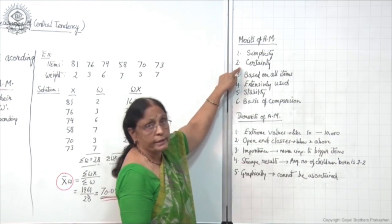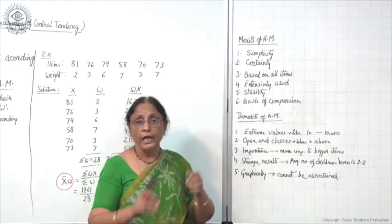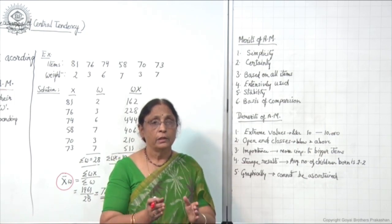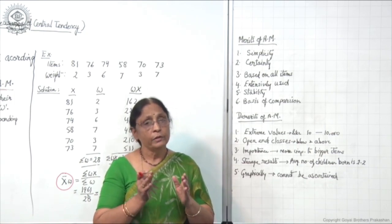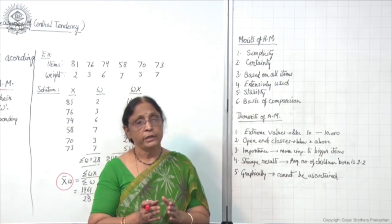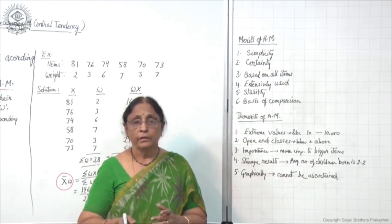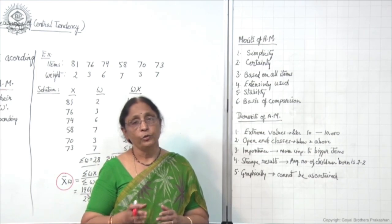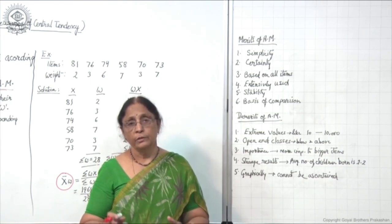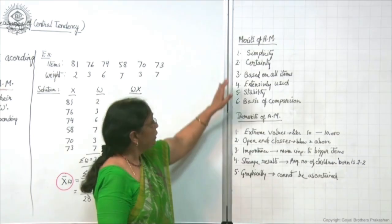The second merit is certainty. Because you are doing the actual calculation, whatever arithmetic mean or answer you are getting is sure and certain, because the answer is obtained after doing proper systematic calculation. So certainty is there.